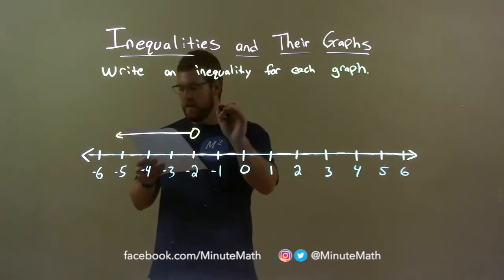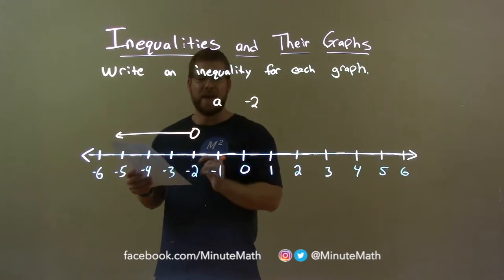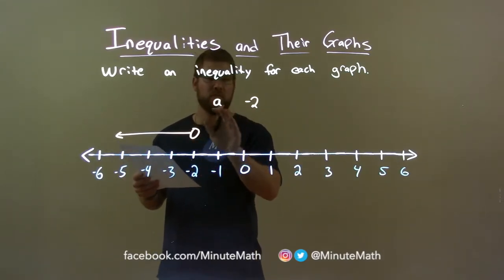They tell us here, let's use the variable a. They say negative 2, we have negative 2, we say that a cannot equal negative 2, so we don't put any equal to sign.